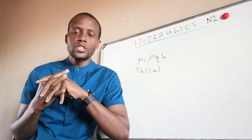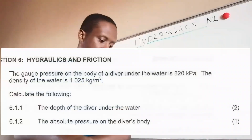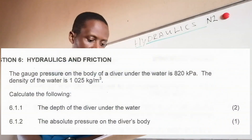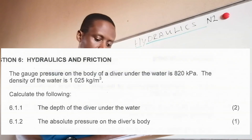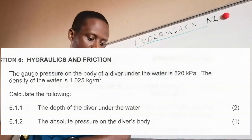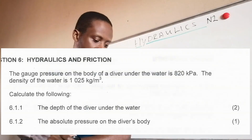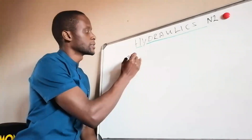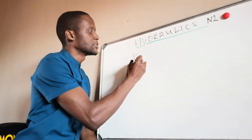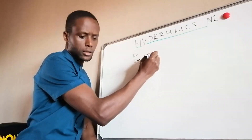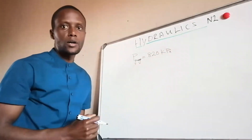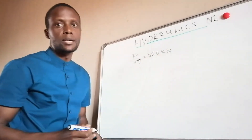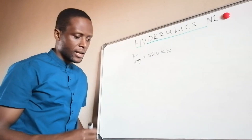Let's jump into our first question. The gauge pressure on the body of a diver underwater is 820 kilopascal. The density of the water is 1025 kg per cubic meter. We must take note that what we have as our pressure is a gauge pressure of 820 kilopascal. Take note of the prefix values.